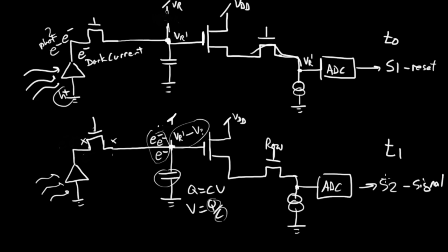So then sample two is our signal sample, signal sample. And what we'll do is we'll subtract sample one from sample two to reduce noise in the system, reduce the KTC noise, reduce the reset noise on this transistor.